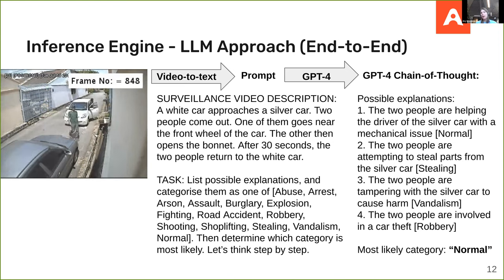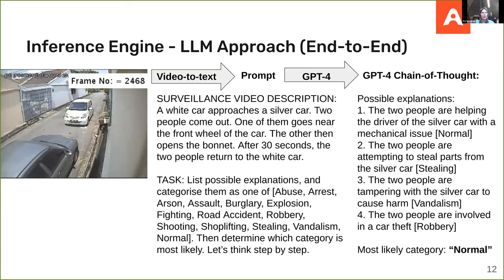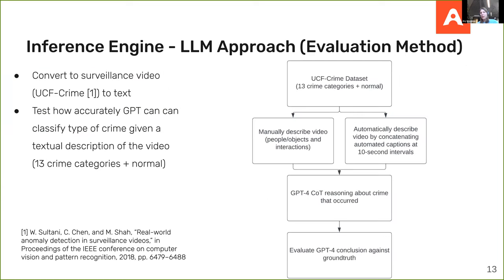Because it's all text, you could also integrate different modalities — for example, combining a description of the video along with a description of the sound. For the evaluation, though, we focused on surveillance videos since that's what data is publicly available. We convert the video to text and then test how accurately GPT can classify the type of crime given the textual description. There are 13 concrete categories of crime plus normal in our dataset. We tried both manual descriptions of the video and an automated approach describing frames at 10-second intervals.